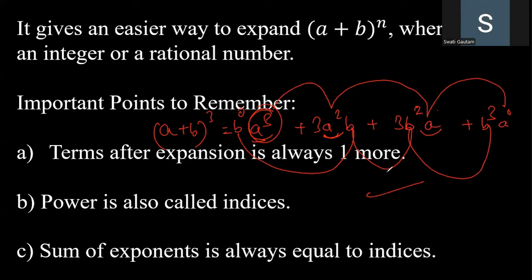This is the introduction to the Binomial Theorem — who introduced it and where we use it. We use it to solve binomial expressions with a finite power. The four key things to remember while expanding are: number of terms is n plus 1, total power of each term equals n, and the first term's power decreases while the second term's power increases. Thank you everyone.